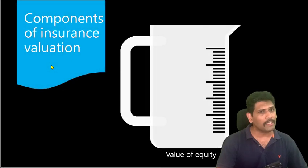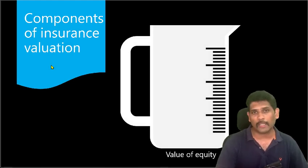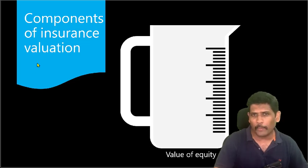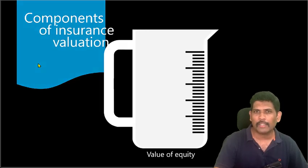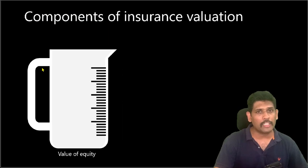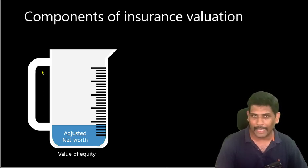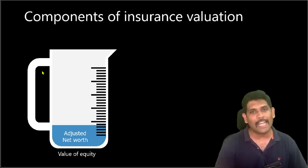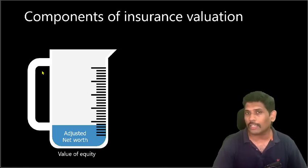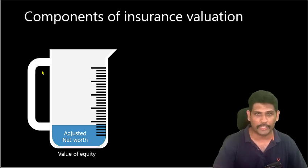So for that, let's first understand the various components of an insurance company's financial statement. Think of an insurance company's equity value as a jar. The first thing we need to understand is what this jar is filled up with. The first component is adjusted net worth. Adjusted net worth is simply the value of assets minus liabilities. The only difference is the assets are measured as per IRDA norms and not as per the accounting approach from the balance sheet. That's why we call it adjusted net worth.